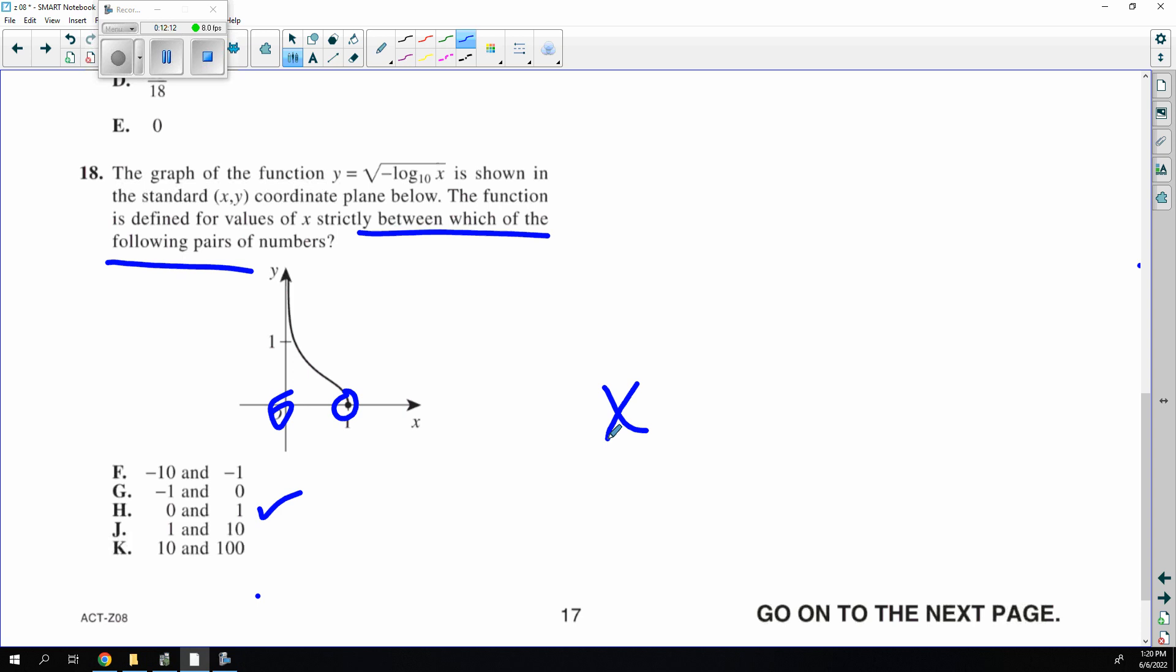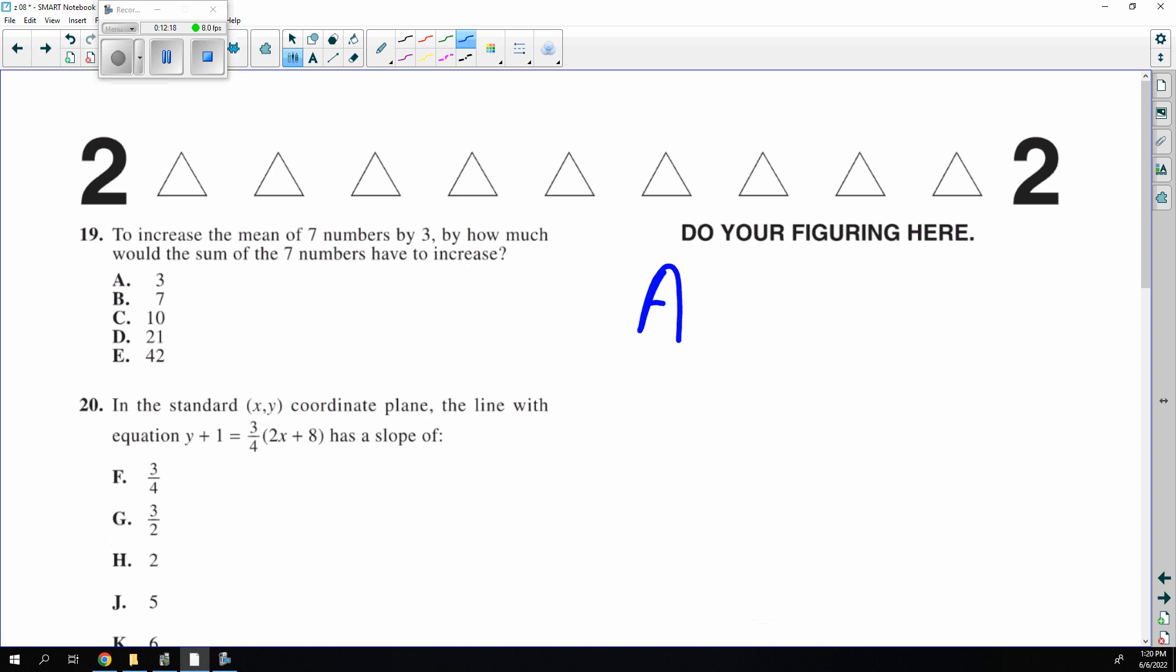Average is total. So to increase the average of 7 numbers by 3, you would have to increase the total by 7 times 3, 21.